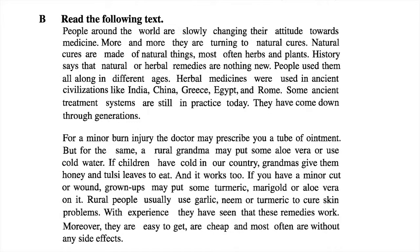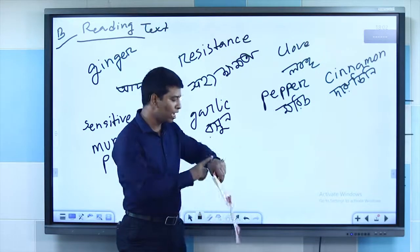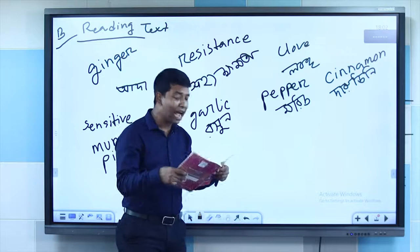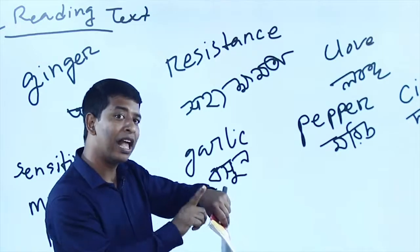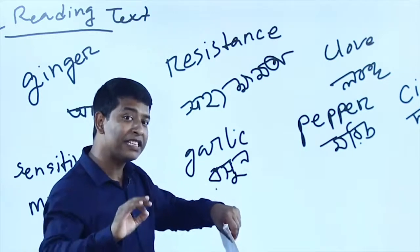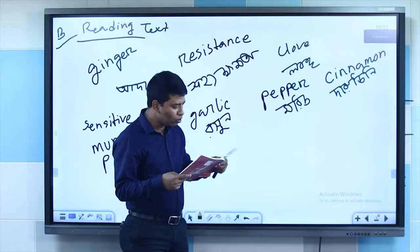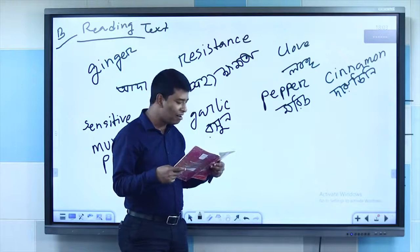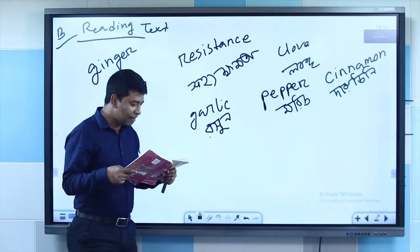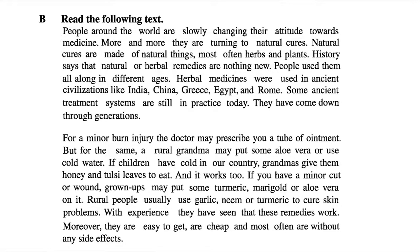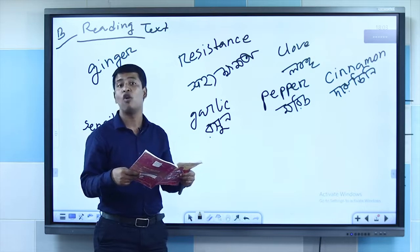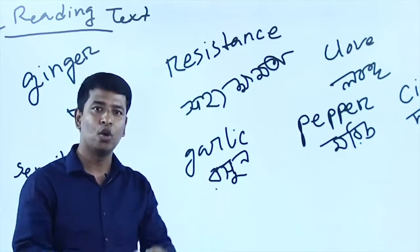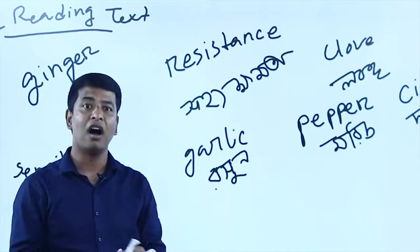If we have a minor cut or wound, grown-ups may put some turmeric. When you have a small cut — not serious, small — you can apply turmeric, marigold, or aloe vera on it. Rural people usually use garlic, neem, or turmeric to cure skin problems. With experience they have seen that these remedies work; moreover, they are easy to get. Natural remedies are always easy to get in our surrounding environment.